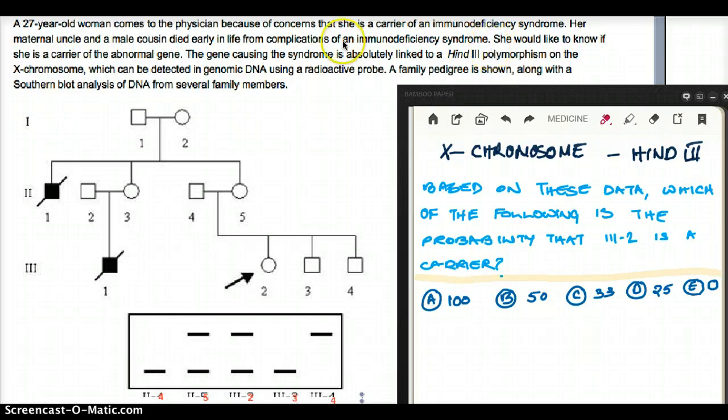But that could be a possibility. And since she's talked about a maternal uncle and a cousin, I'm thinking this is an X-linked disease, or it could be an X-linked disease. She would like to know if she's a carrier of the abnormal gene. The gene causing the syndrome is absolutely linked to HINC3 polymorphism.